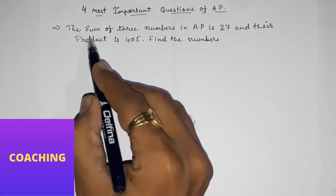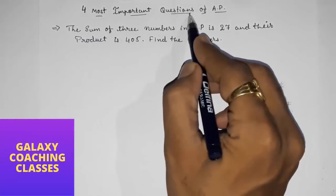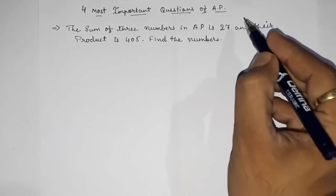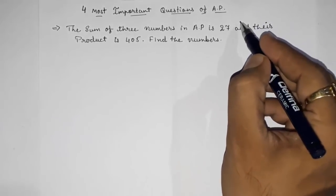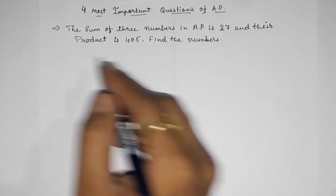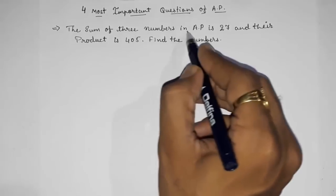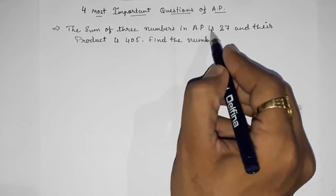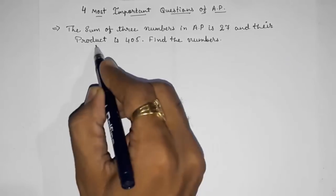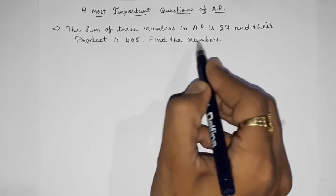Hello friends, today we are going to solve four most important questions of AP which are frequently asked in board examinations. So let us start question number one. The sum of three numbers in AP is 27 and their product is 405. Find the numbers.